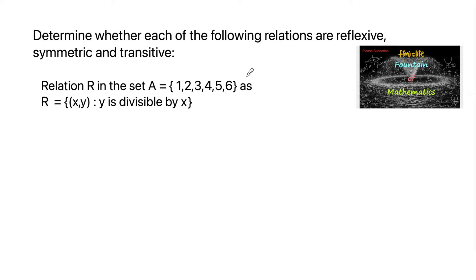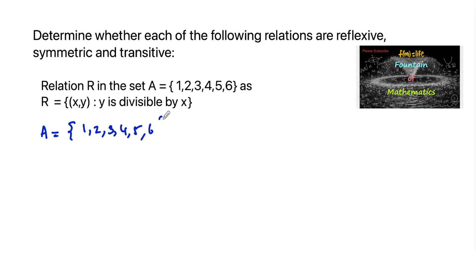Determine whether the given relation is reflexive, symmetric, and transitive. Relation R in the set A = {1, 2, 3, 4, 5, 6} is defined by (x, y) such that y is divisible by x.